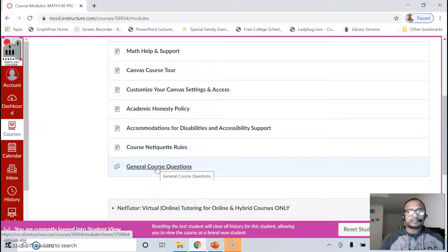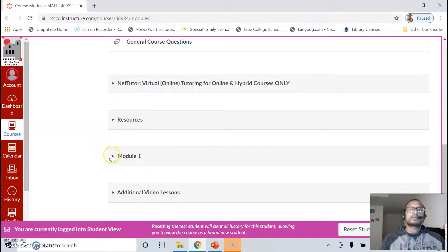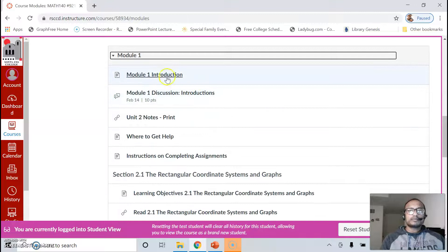The general course questions—that's where you put your general questions about the class. You can say, you know, on section 2.4 I'm having trouble with number six, can someone please help me. In module one, start with the introduction and make your way forward.